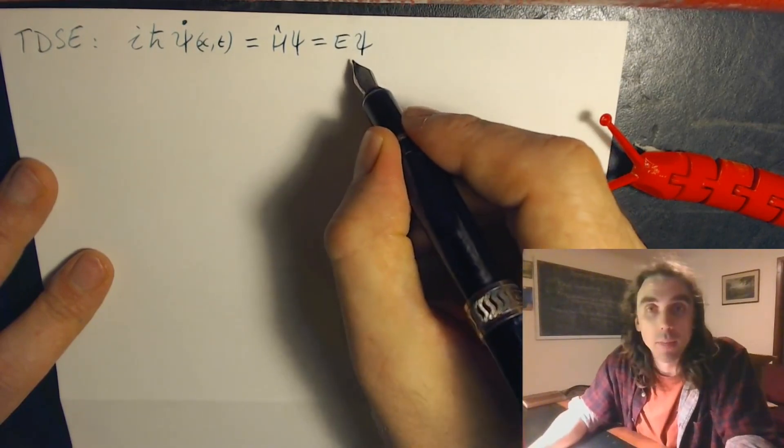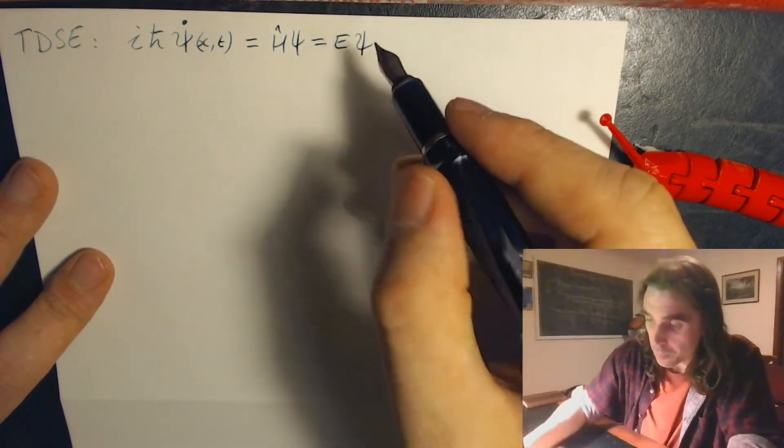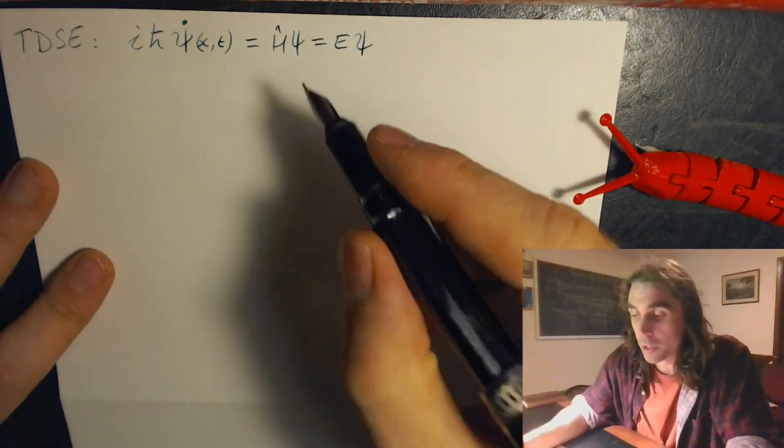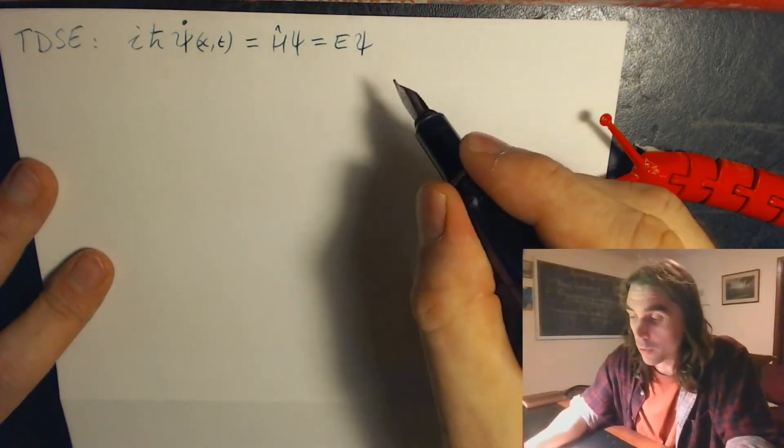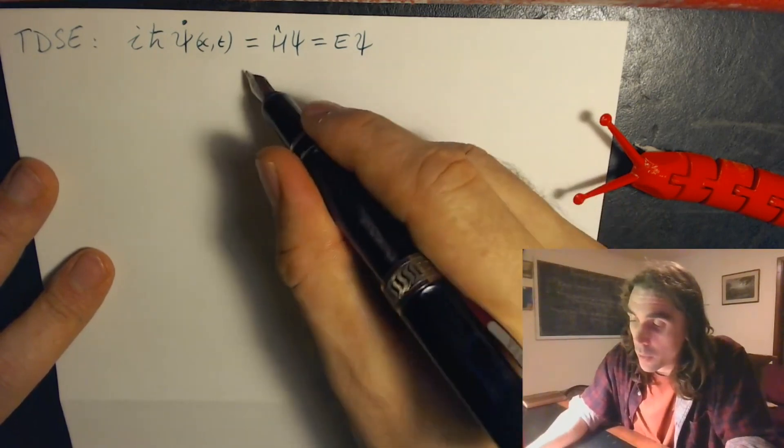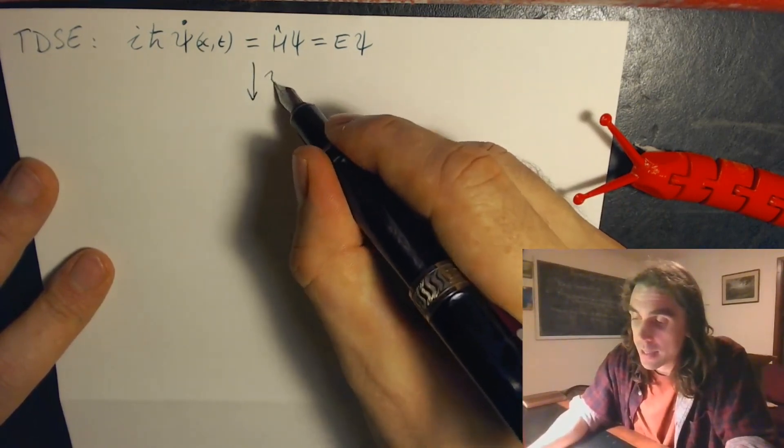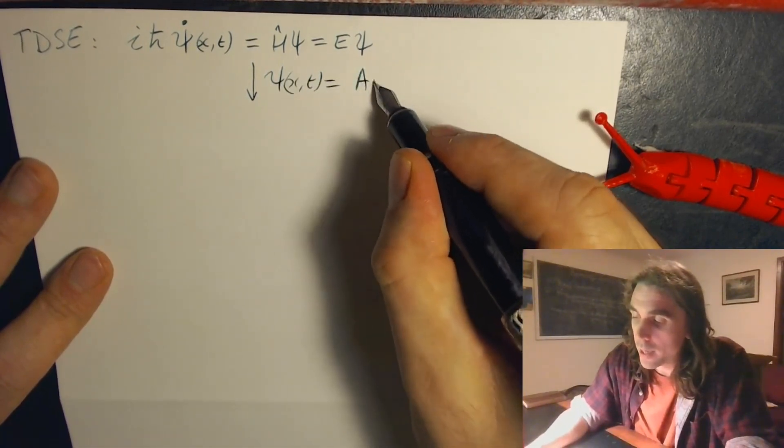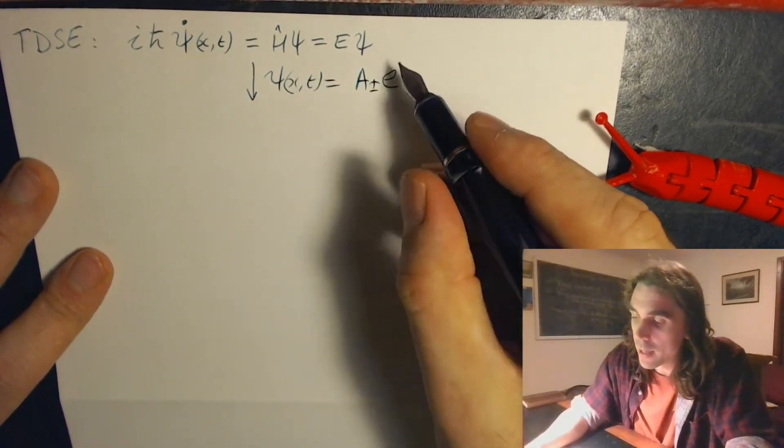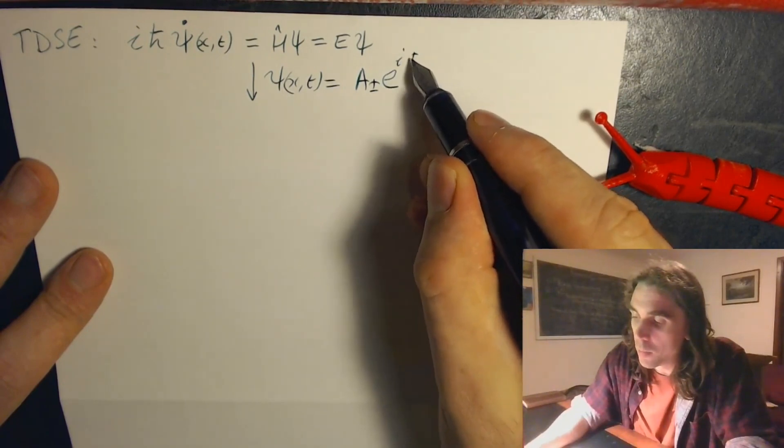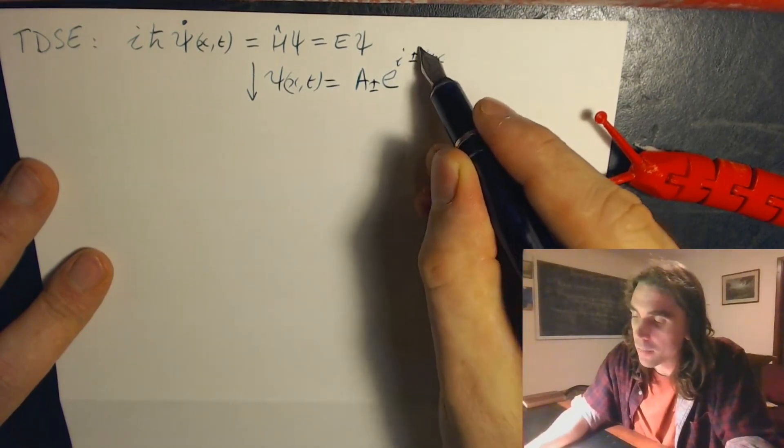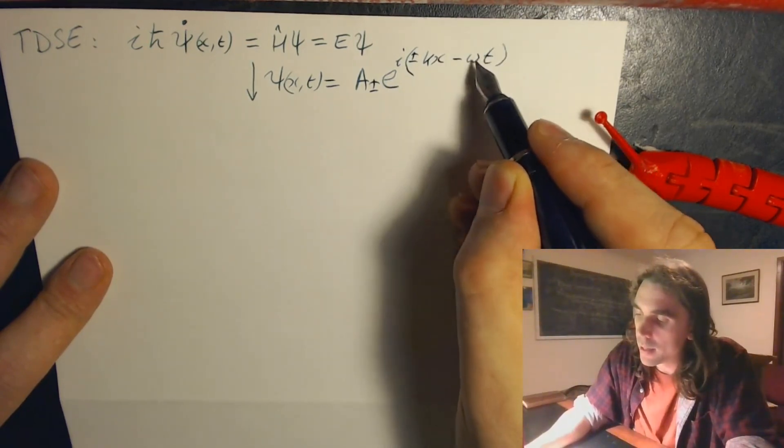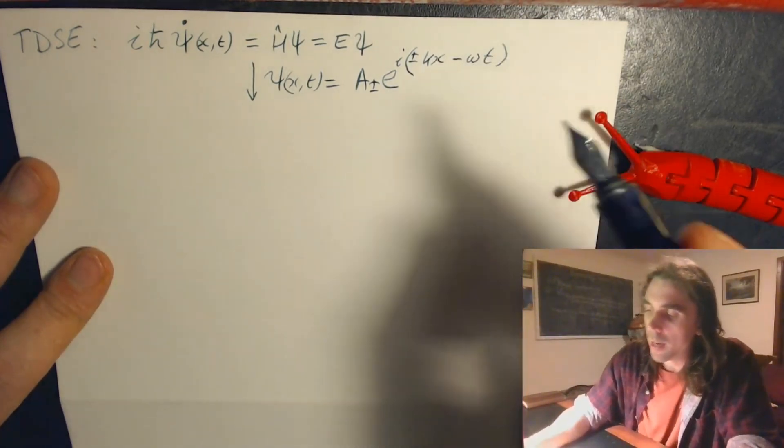In this case this equals e psi because we've already solved the time-independent part. So psi adds in the time dependence corresponding to phi that we've already solved for. We can again solve this with an ansatz. Let's say that psi of x and t is equal to a plus or minus e to the i plus or minus kx as before, and this time minus omega t. Remember that the time dependence of an energy eigenvalue always just adds this phase winding term.